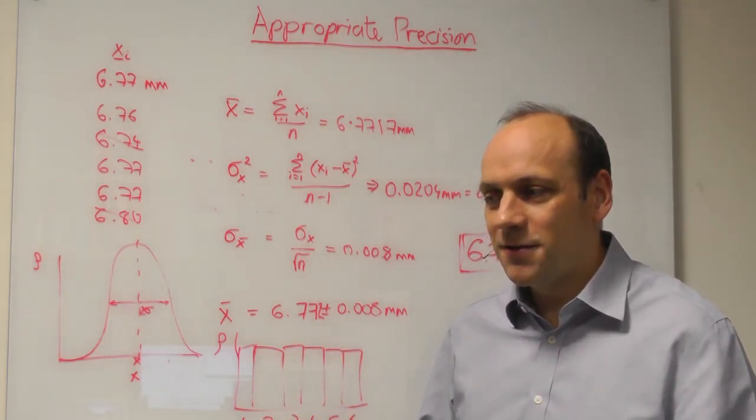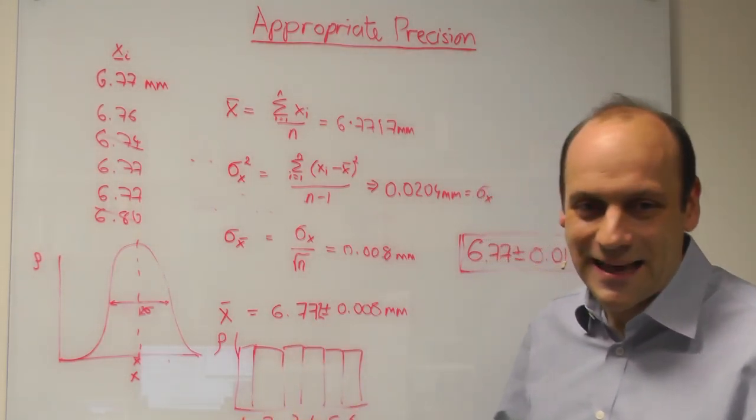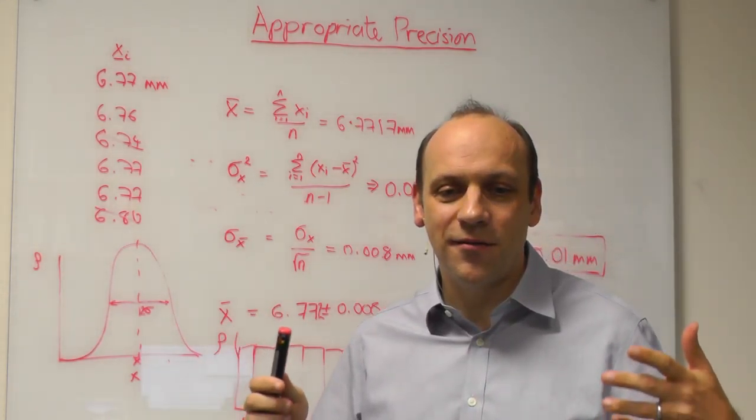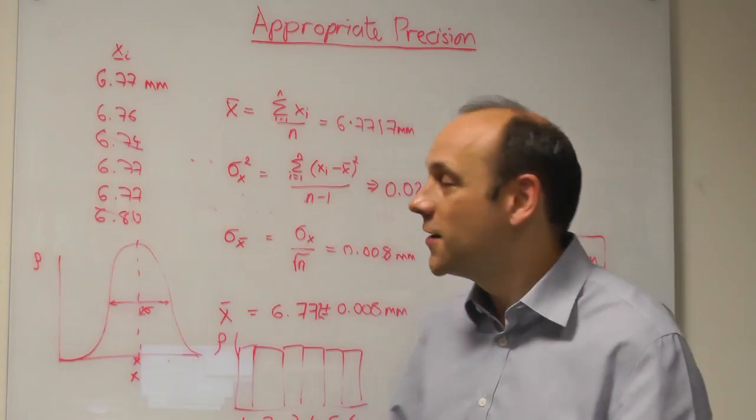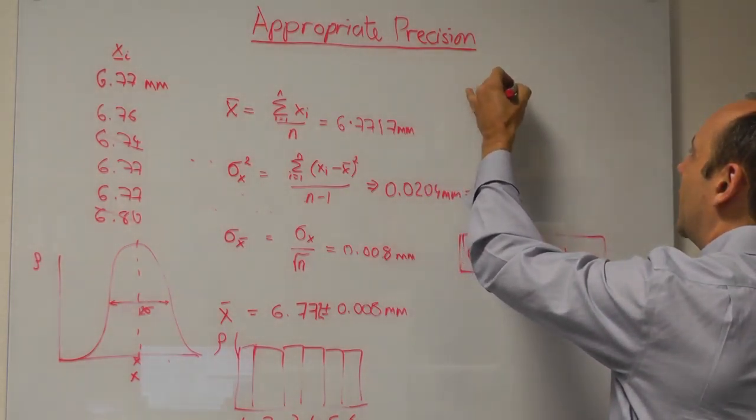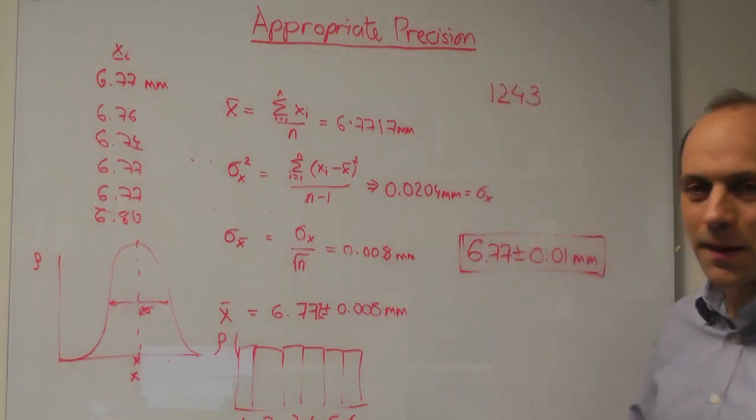Another option people use are significant figures, what's called SF. And here we quote the number of numbers of accuracy we use. So if we measure a number, let's say 1,243, to 3SF...